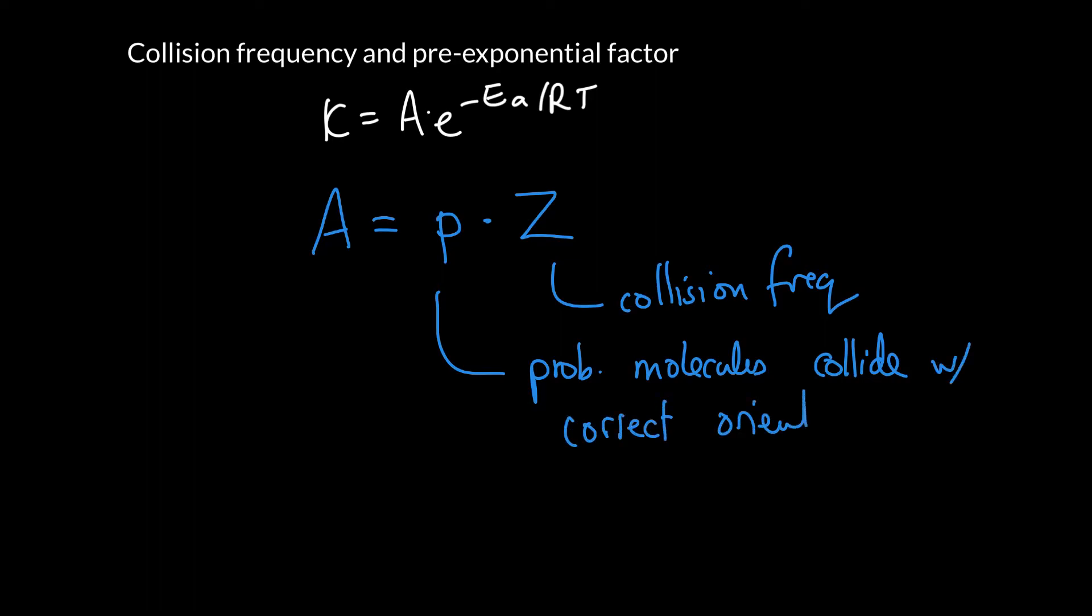The groups on the molecules themselves have to hit each other, the ones that are going to react. For a small molecule, the chances are they're just going to hit naturally. But for a very large molecule, there might only be a very small part that it has to react upon. And if those don't collide, you're not going to see a reaction.